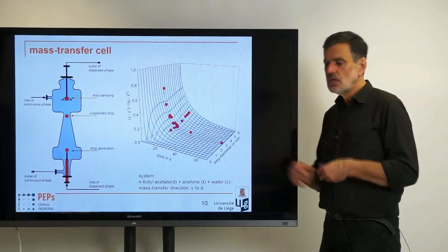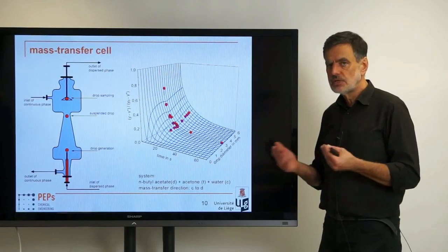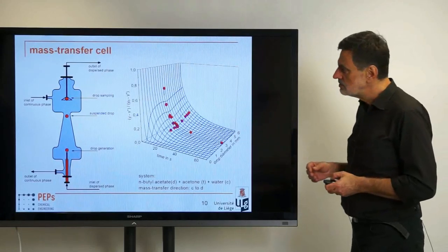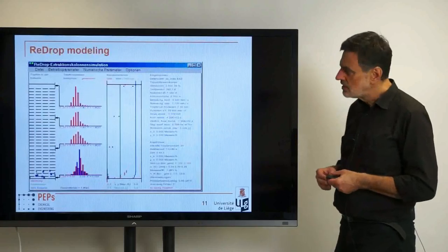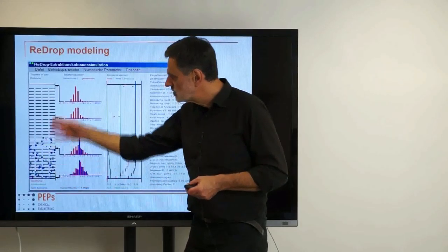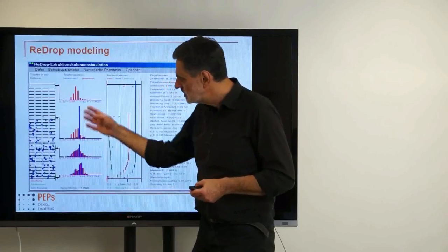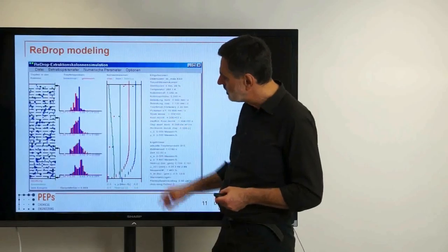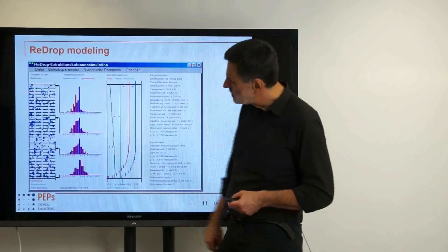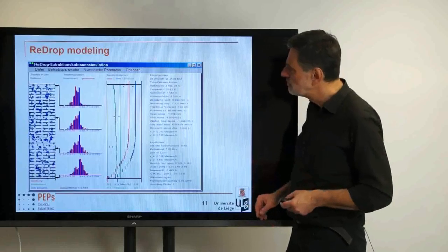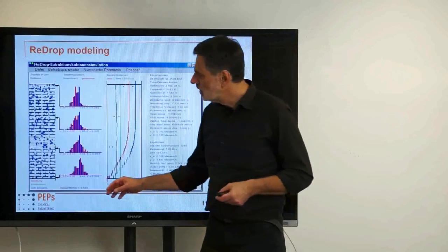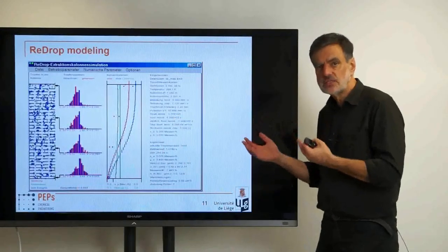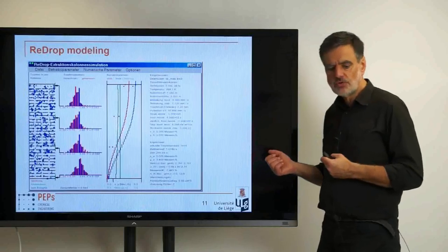You see the red data points, and you see the mesh of a model that allows describing the mass transfer behavior. This model was first designed by Martin Henschke, who did the majority of the first work on design of extraction columns. It was later proven to work for technical systems by Tobias Krömping and developed further by many other PhD students and co-workers. The result shows the extraction column with individual drops rising, drop size distributions, and concentration profiles. We really follow the individual drops and evaluate their behavior, and we are able to describe the transient, time-dependent behavior of such an extraction column.